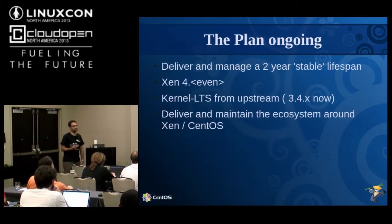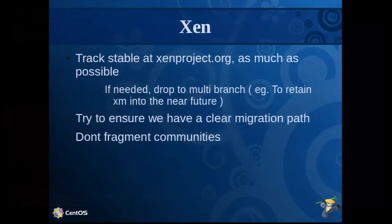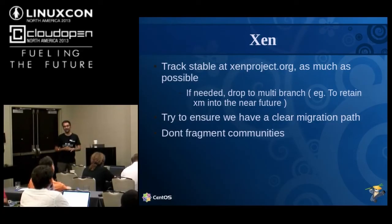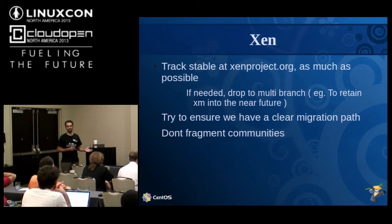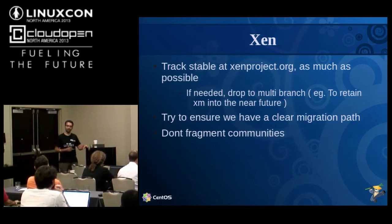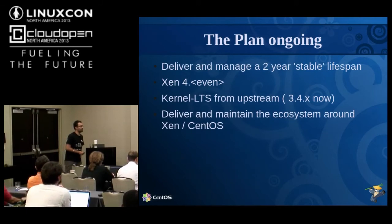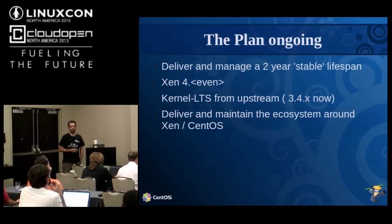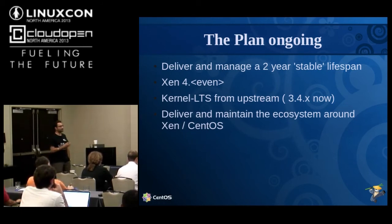From the Xen side, we wanted to make sure we don't fragment the communities. Whatever we were shipping, we wanted those users to be able to go back to the xen.org or xenproject.org infrastructure and actually talk to people there. Unlike Samba, for example — the Samba shipped in CentOS is about two and a half to three years adrift from mainline, so if you go to the Samba community with a problem, the first response is: install the latest release. We didn't want that situation with Xen. We try to promote communities coming up around the Xen project, rather than fragmenting around CentOS.